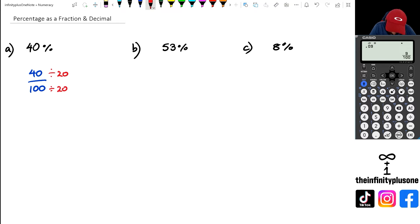So I could actually go divided by 20 and divided by 20 for both top and bottom. And what I would get is I would actually get this as two-fifths. So as you can see the fraction for 40 percent is actually two-fifths.